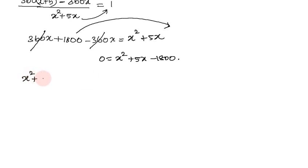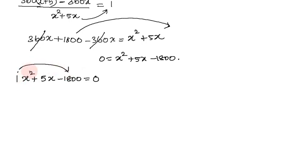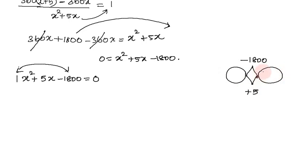So we have x squared plus 5x minus 1800 equal to 0. If we factorize: 1 times minus 1800 is minus 1800, and we need two numbers that multiply to minus 1800 and add to plus 5. Let us factorize 1800.